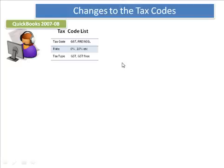With the new version in QuickBooks, a new tax model has been introduced. There are four main components to this new tax model. The first one is the use of tax codes. Within QuickBooks 2007-2008 and previous versions, you were able to set up a tax code list. Within those tax codes, you assigned a rate and also a tax type — whether that is applicable for GST or GST-free. Those tax codes then flowed into your tax reporting, in particular your activity statements.